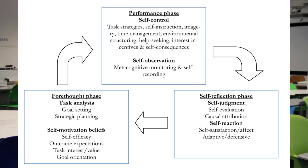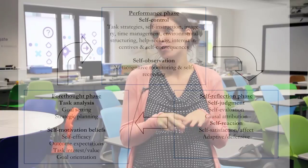You have a forethought phase, which includes all the strategies that learners can use before they start a task. You have a performance phase — all the strategies you use while you are learning. Then you have a self-reflection phase — all the strategies you can use after you have finished a learning task.